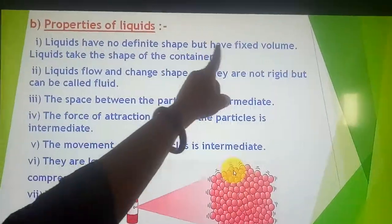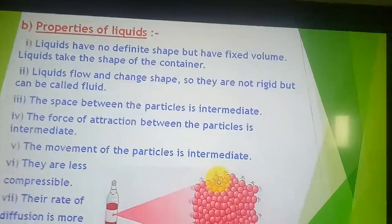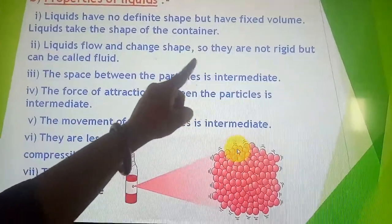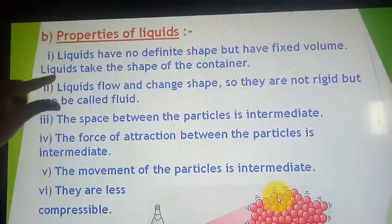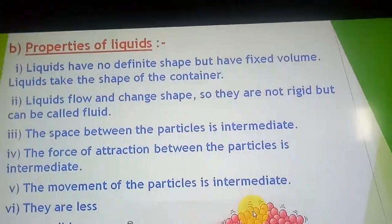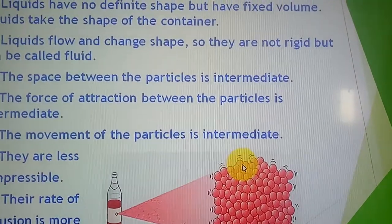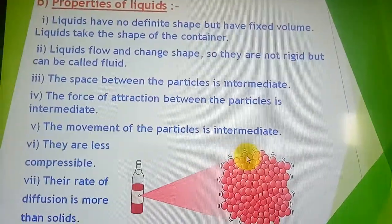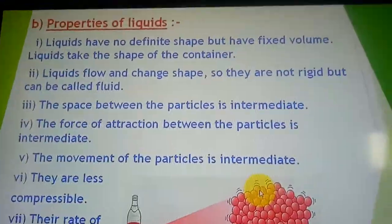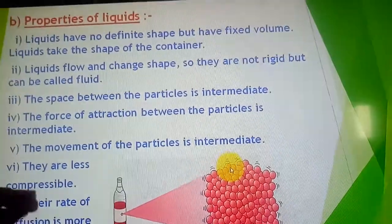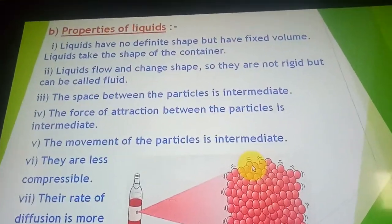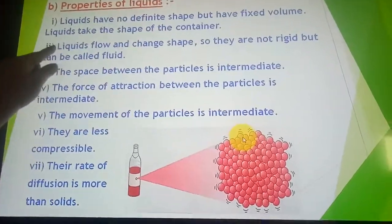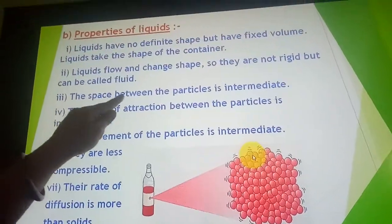Let us recall the properties of liquids. Liquids have no definite shape but have a fixed volume — they take the shape of the container. Second property: liquids flow and change shape, so they are not rigid but can be called fluids. When you pour water on the floor it starts flowing, and milk poured also flows. This fluidity is because the space between the particles is a little larger.